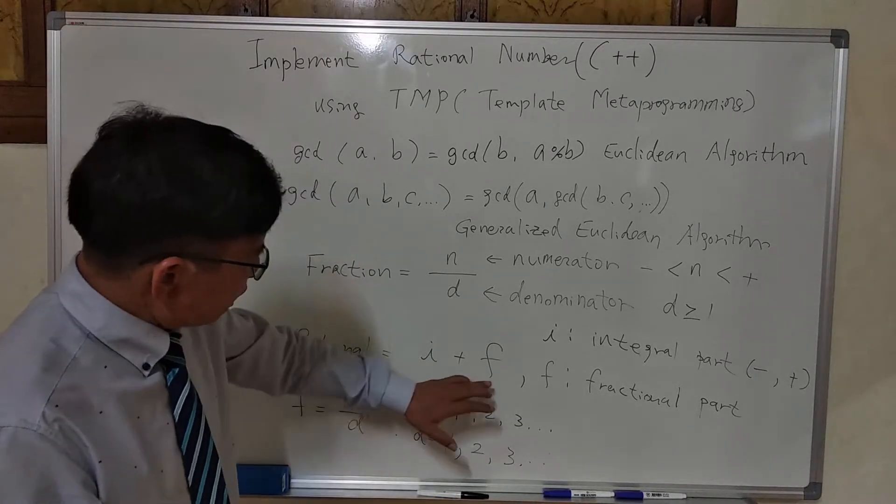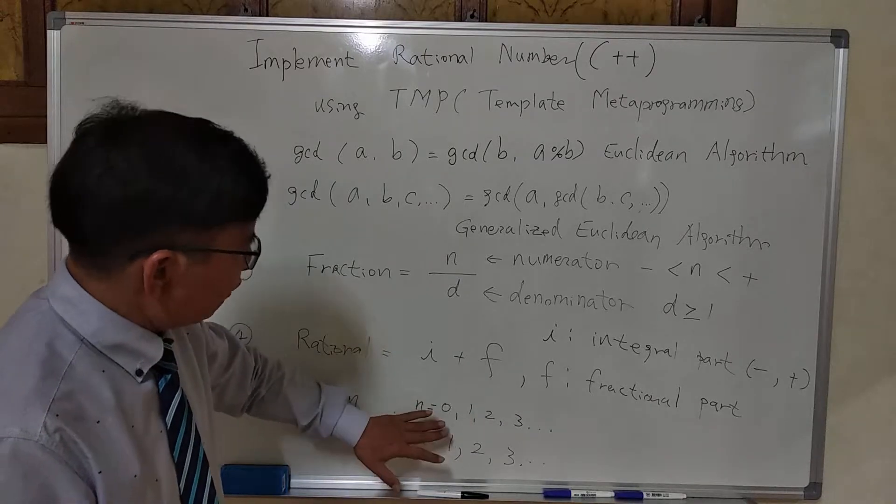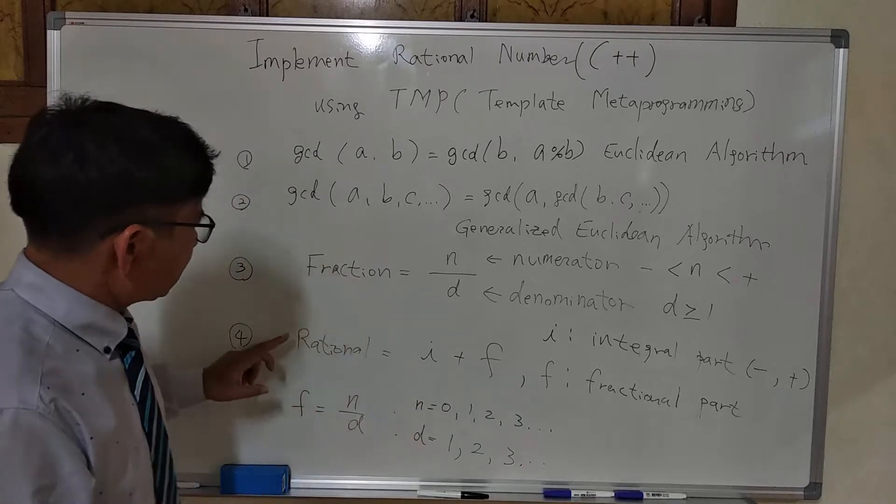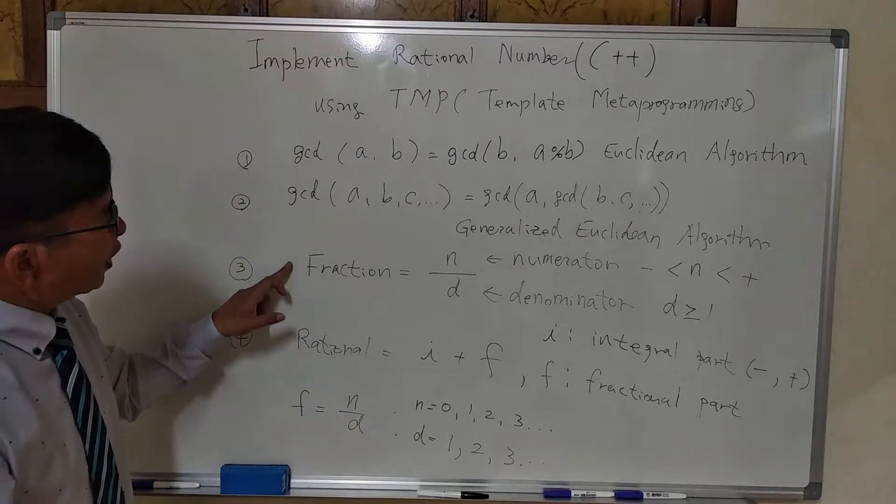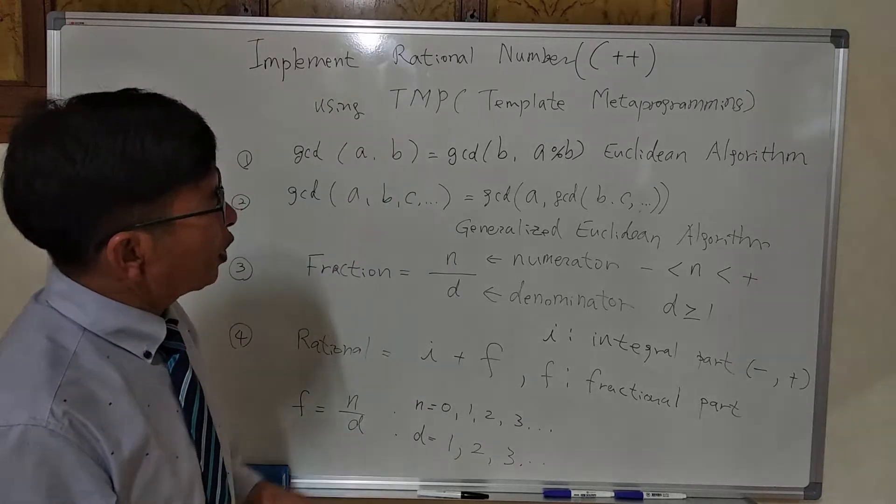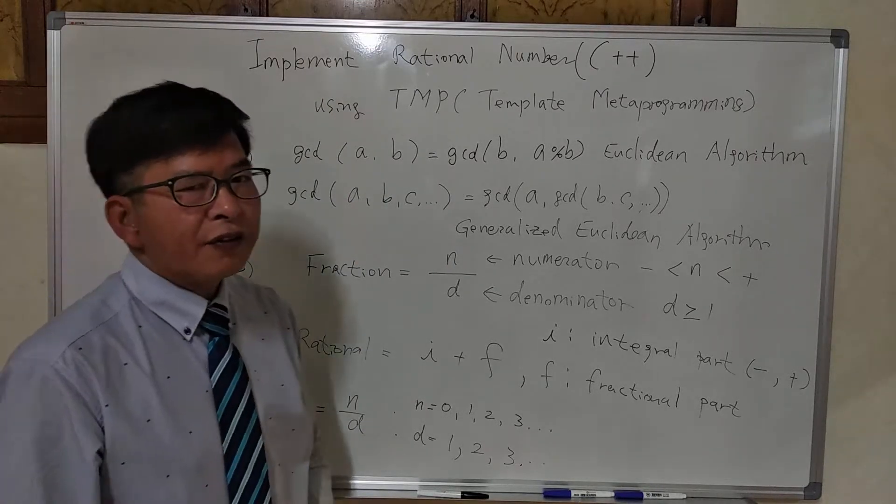So the fractional part is always positive, and the integer part can be negative as well. This is class rational. This is class fraction. And I will explain how to implement all these things in this series of videos.